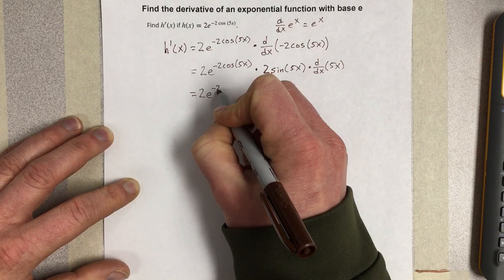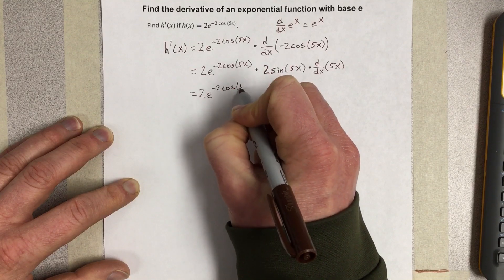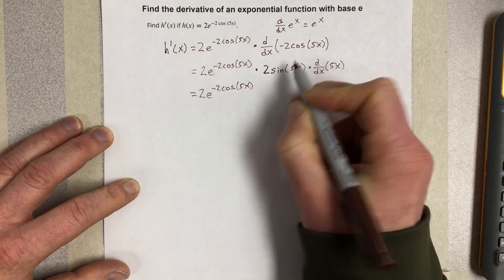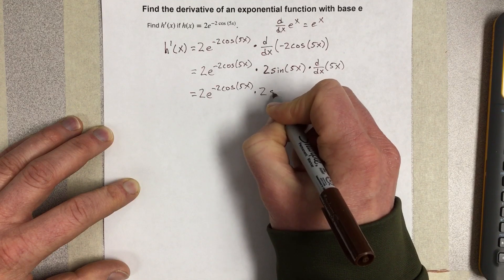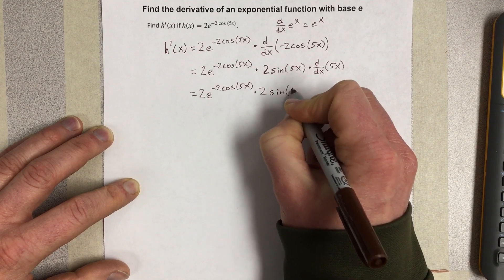So we get 2e to the negative 2 cosine 5x times 2 sine 5x.